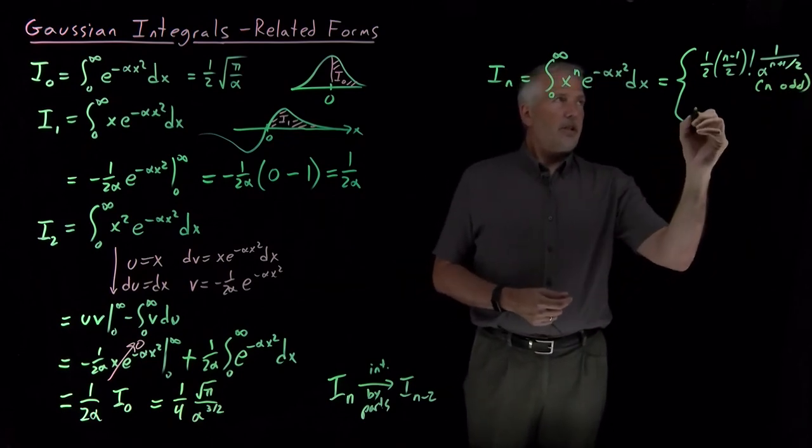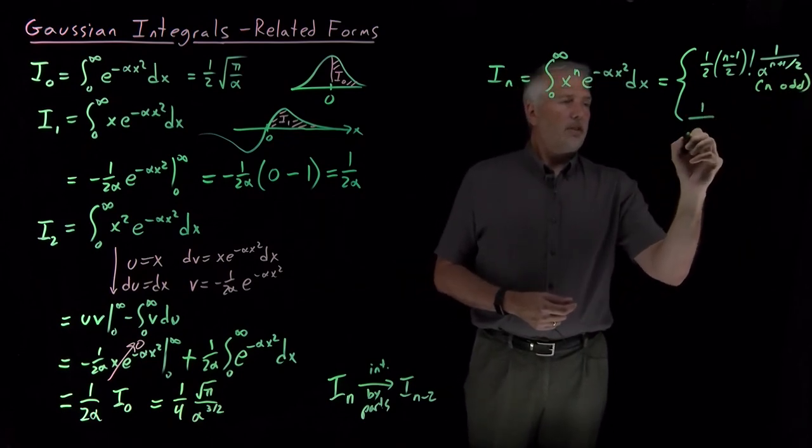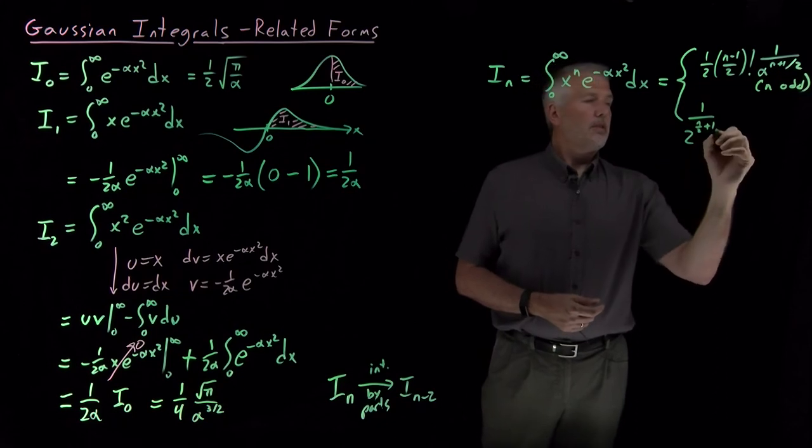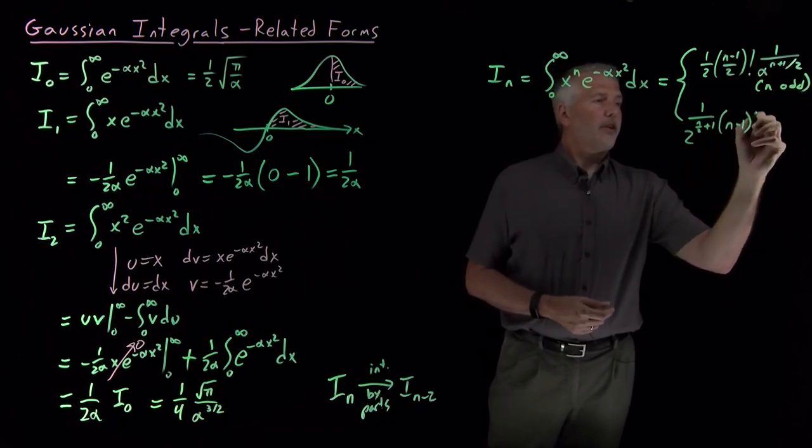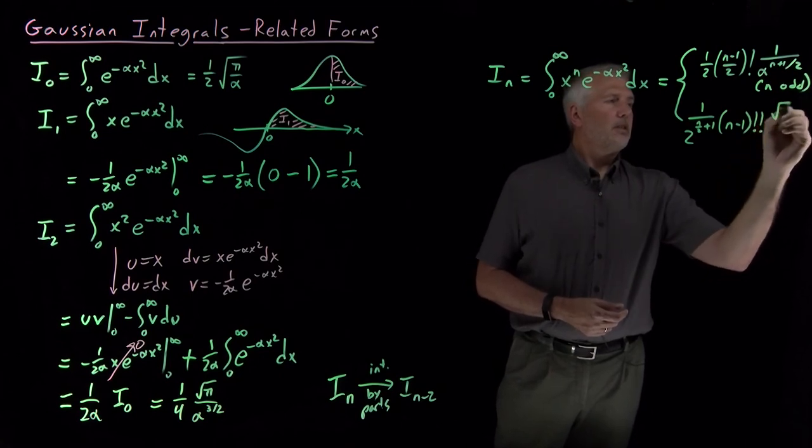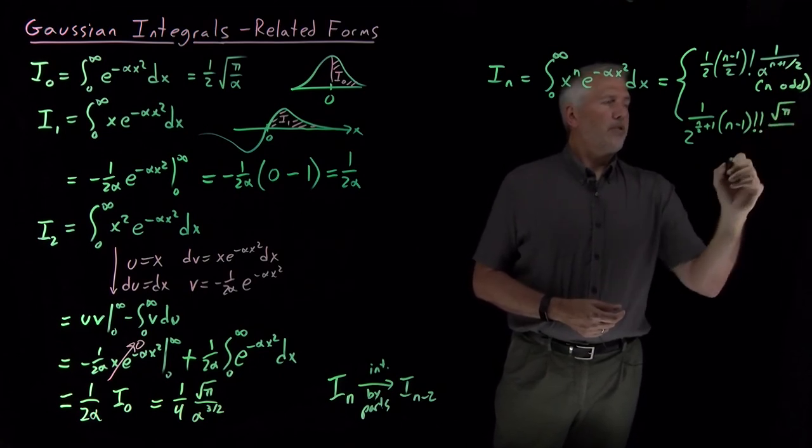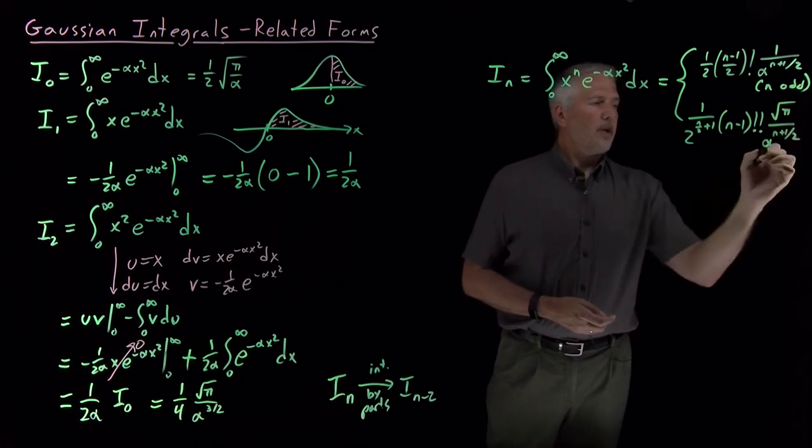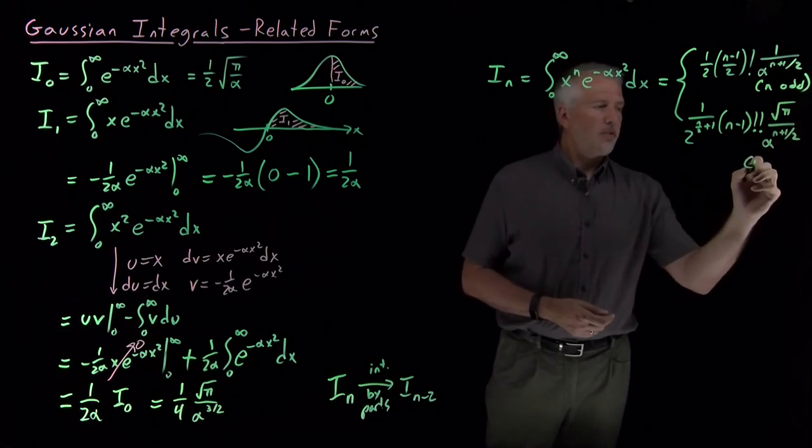And if n is even, on the other hand, then what we have is a different number of powers of 2, a different style of factorial. And here's the one where we have the square root of pi showing up over, again, some number of powers of alpha. So that's when n is even.